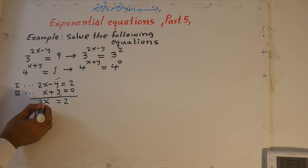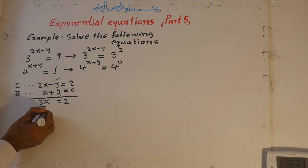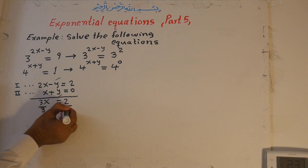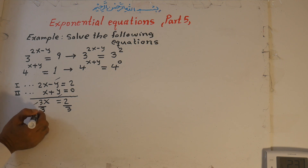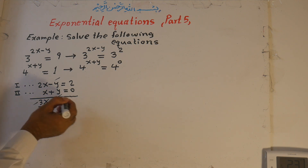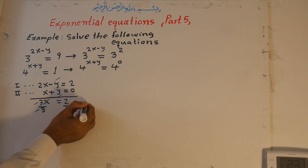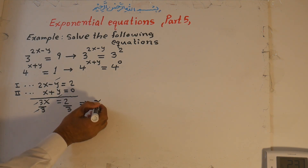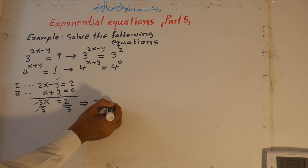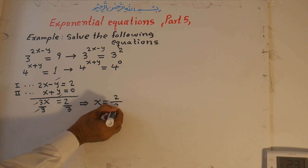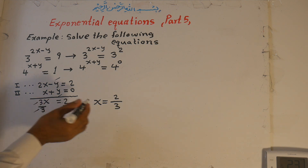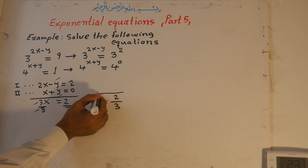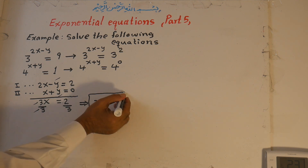To remove the coefficient from x, we divide both sides of the equation by three. The three on the left cancels with three, leaving only x. Therefore x is equal to two over three. This is a first-order equation with two unknowns, and the first unknown x equals two over three.